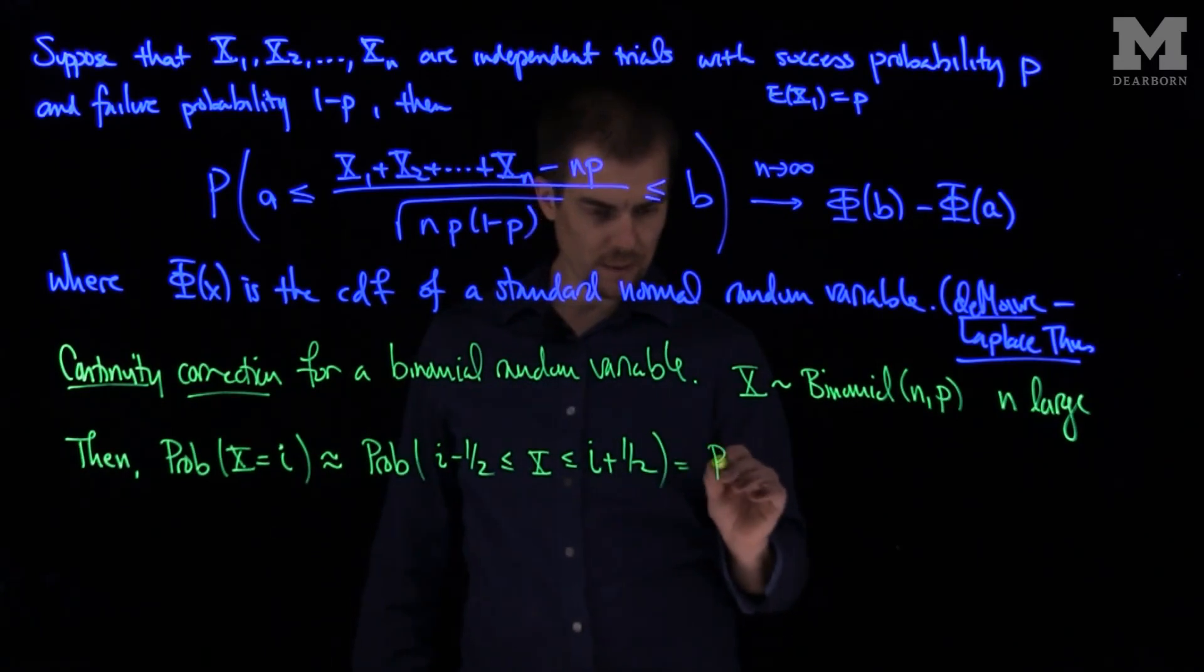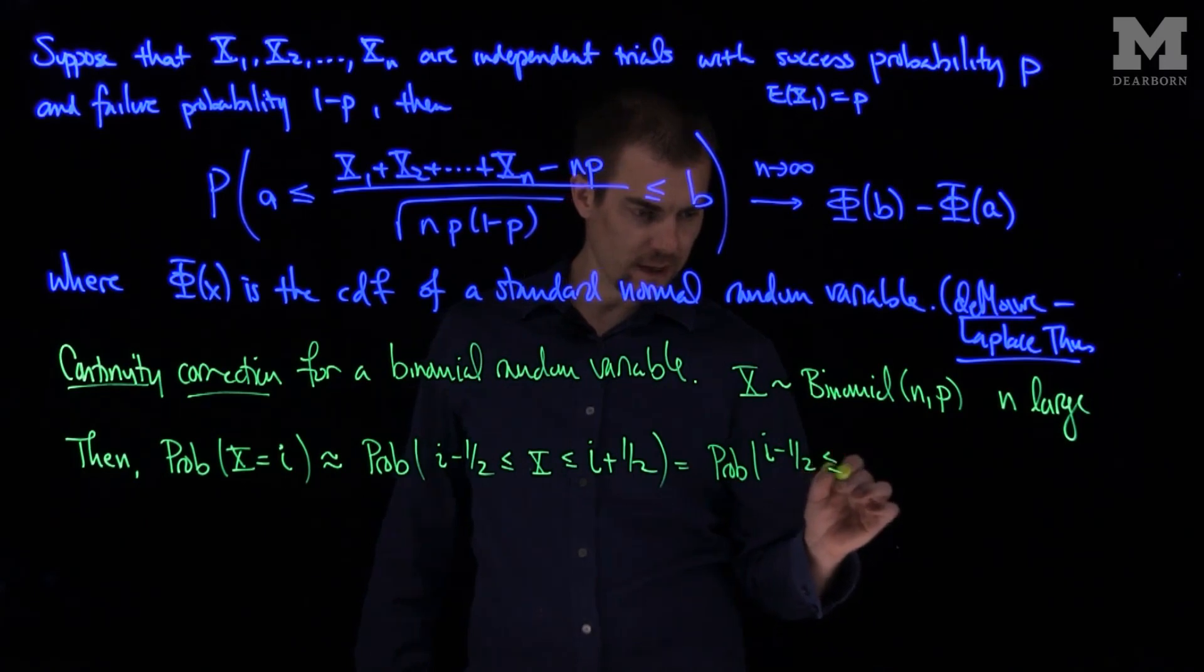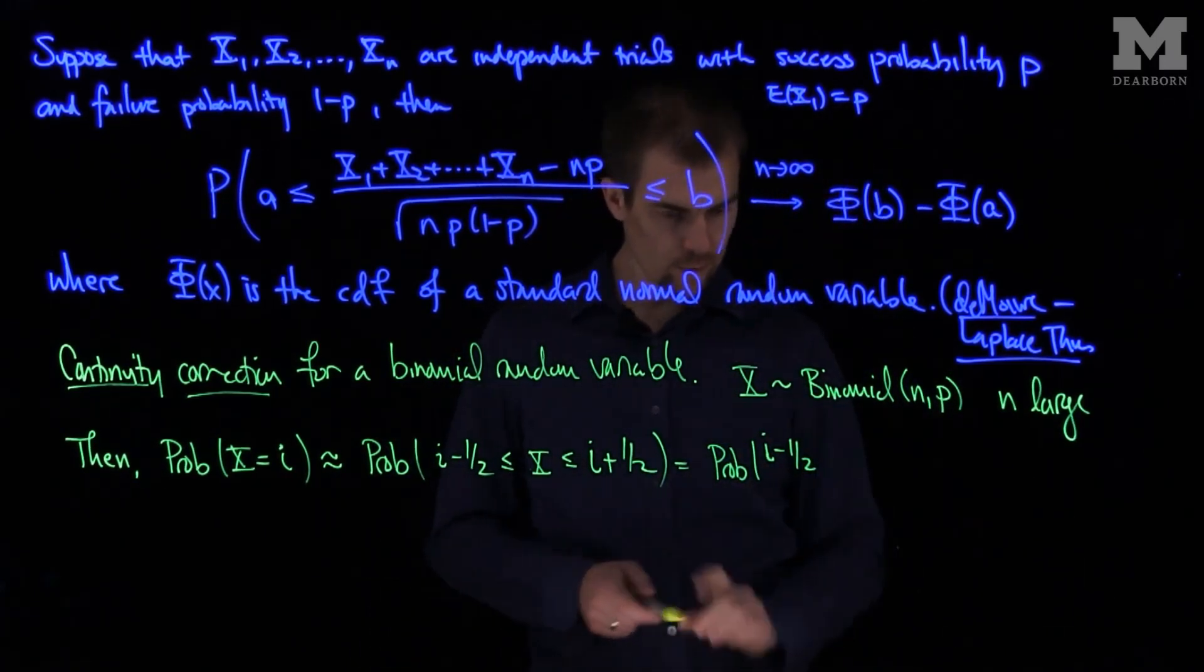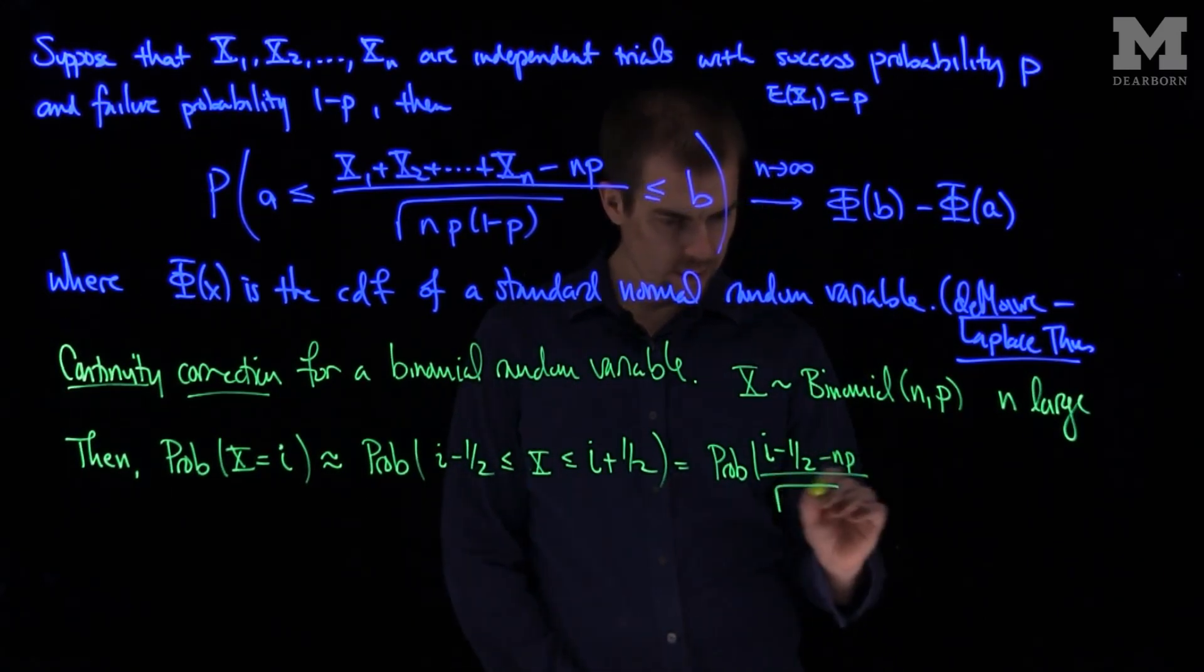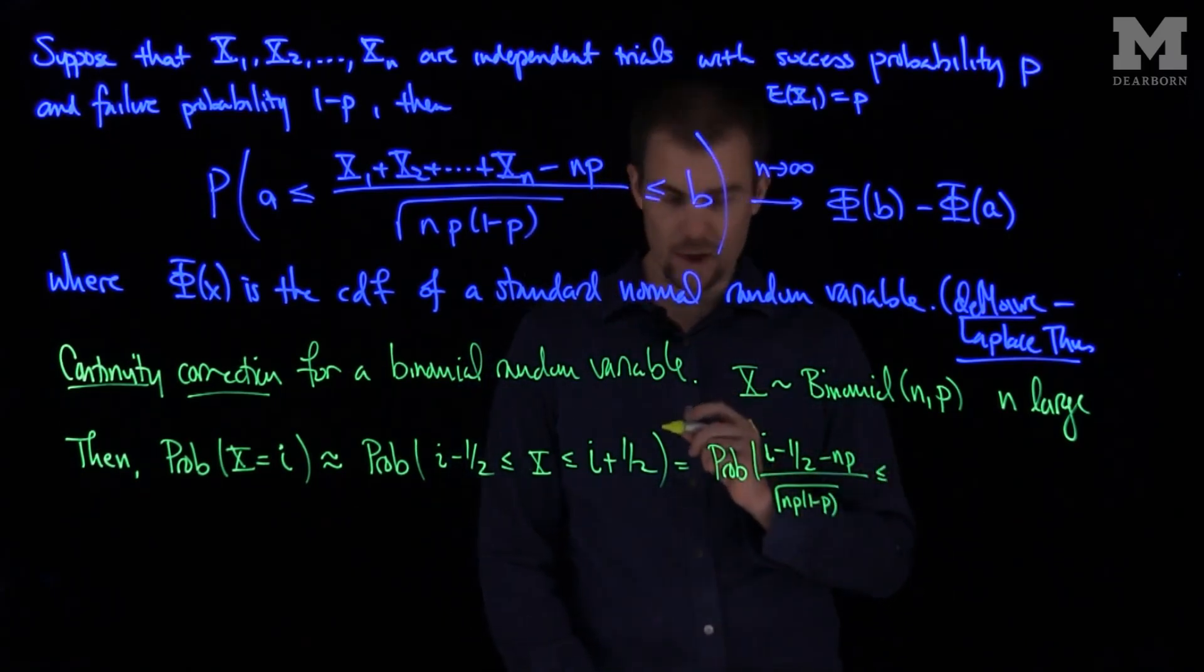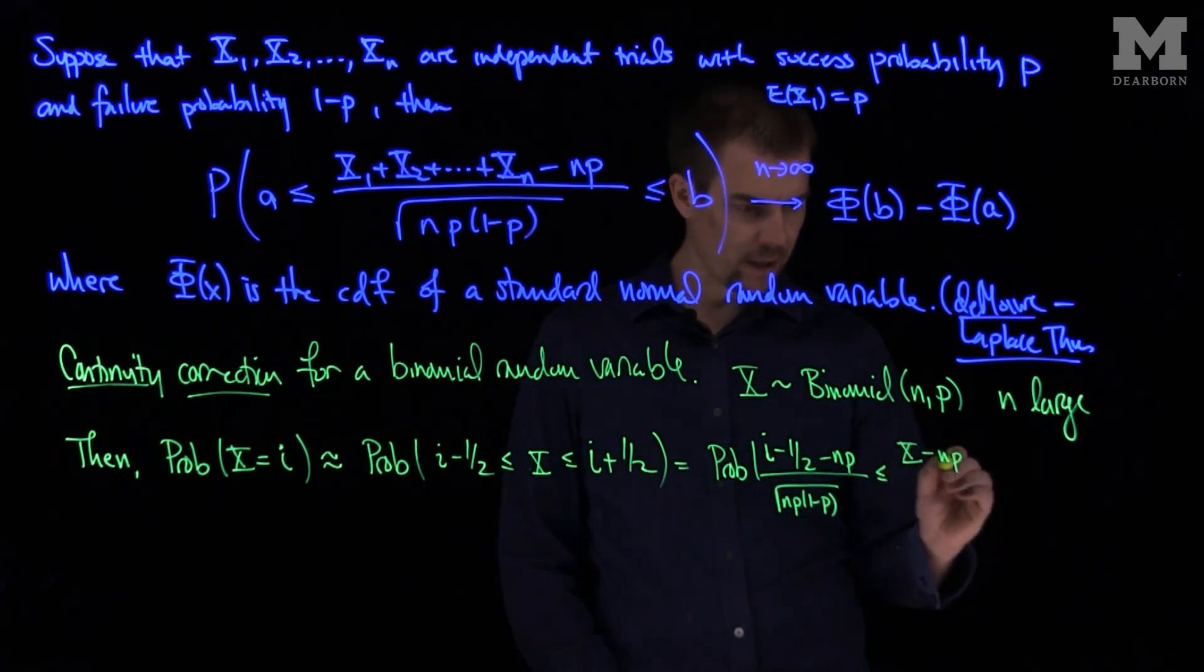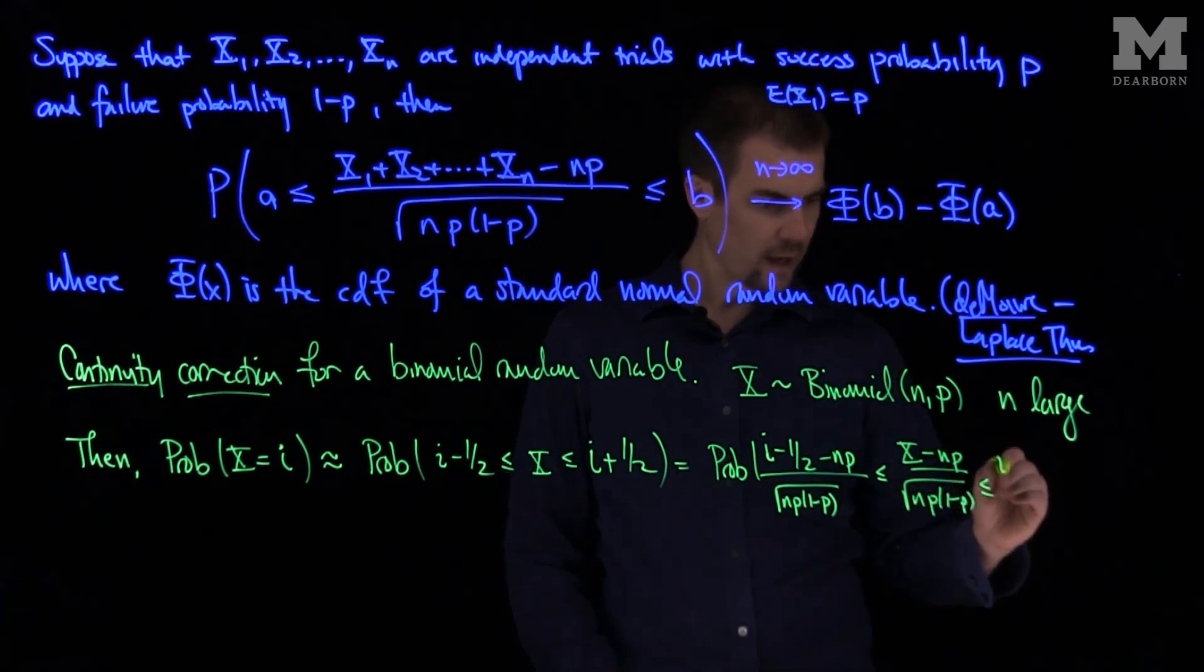We write this as the probability that i minus one-half is less than or equal to... So we'll subtract off n times p, divide by the square root of np times 1 minus p, less than or equal to x minus np over the square root of np times 1 minus p, less than or equal to i plus one-half minus np over the square root of np times 1 minus p.